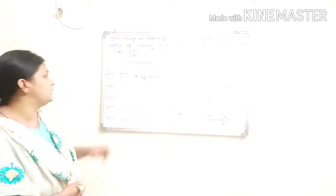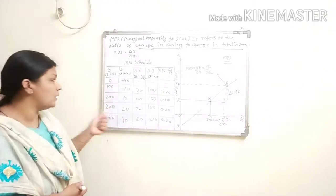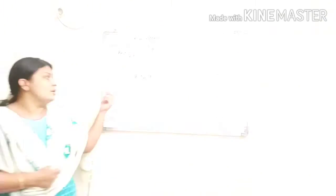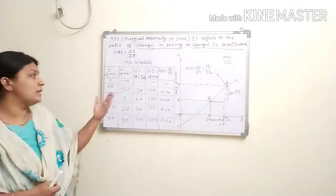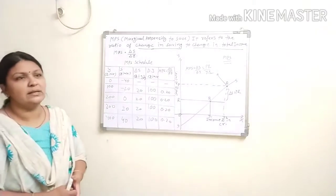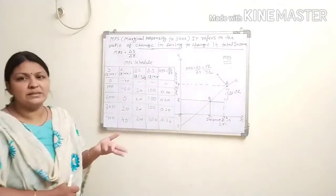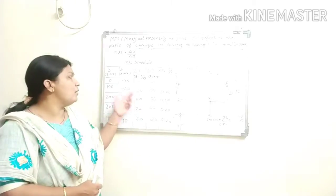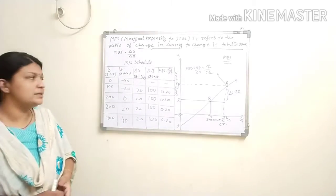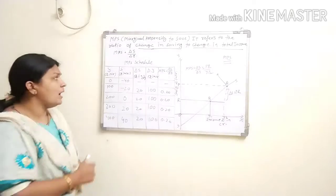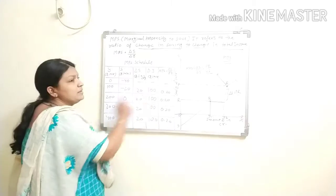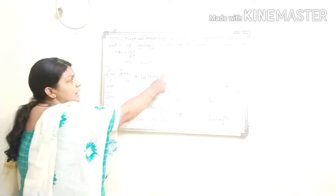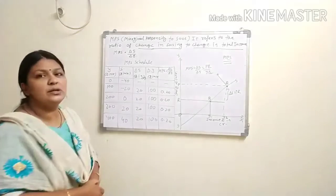Now your income increases by 100 rupees, so income is now 100 rupees in crores and saving is minus 20. Your consumption is 120 rupees while income is only 100, so you are using 20 rupees from previous savings — this again shows dis-saving. The change in saving: minus 40 to minus 20 gives delta S equals 20. Change in income: 100 minus 0 gives delta Y equals 100. So MPS equals delta S upon delta Y equals 20 upon 100, which is 0.20.